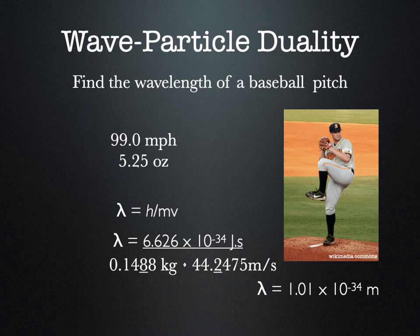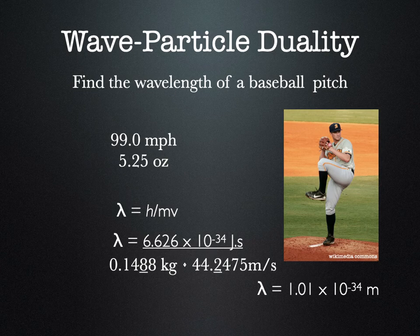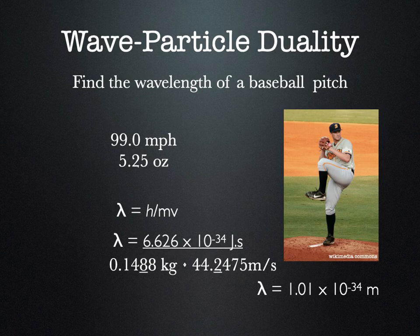We might ask: if a baseball thrown at 99 miles an hour has a wavelength, why don't we see it move through the air in an up-down, up-down wave pattern? It would be unhittable — fantastic for the pitcher. But you can see why we don't notice it: when your wave peaks are 10 to the negative 34th meters apart, to our eye that's going to seem like a straight line. The wavelengths are simply too small to be noticed or measured.